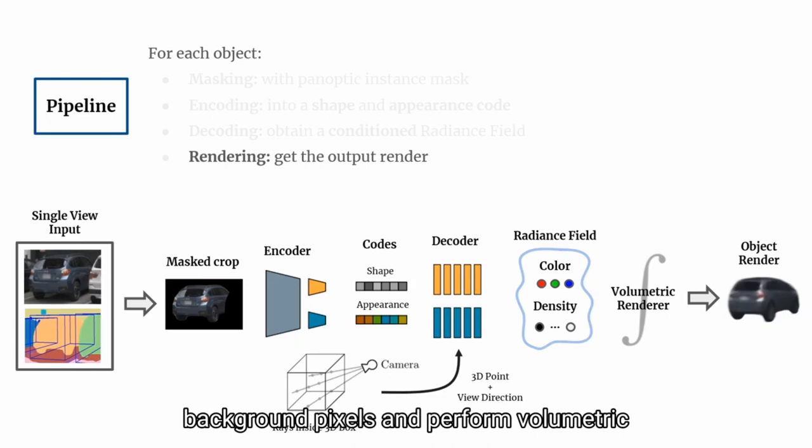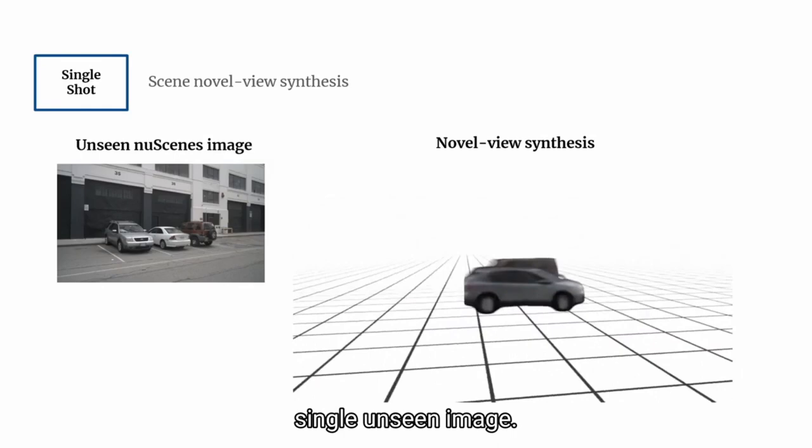We query the radiance field for points along all rays belonging to the foreground and background pixels, and perform volumetric rendering in order to generate a rendering of the input image. We can show that AutoRF can robustly synthesize full scenes solely based on a single unseen image.